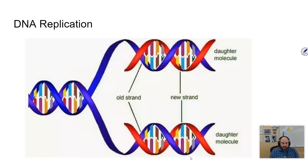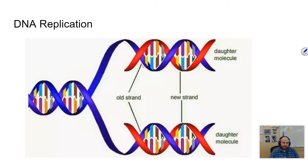DNA replication follows what's called the semi-conservative model. 'Semi' means half and 'conservative' means to save something. So you have it saving half of the old strand. You can see in this picture the blue strand serves as the original strand. The blue strand is going to separate, and each original blue strand is going to serve as a template for a new red strand to be made.